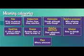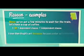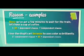Obviously there are many others, but these are the most common ones. Let's look at some examples of the reason category. 'Since we've got a few minutes to wait for the train, let's have a cup of coffee.' You can see the subordinating conjunction right before the dependent clause, then a comma, then an independent clause. Another example: 'I love Van Gogh's art, because he uses color so brilliantly.' Here we have the independent clause, plus the subordinating conjunction, and then the dependent clause.